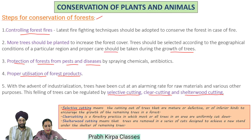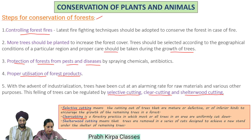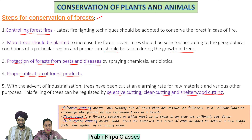Clear cutting is a forestry practice in which most or all trees in an area are uniformly cut down. Shelter wood cutting means that trees are removed in a series of cuts designed to achieve a new stand under the shelter of remaining trees, encouraging the growth of remaining trees in the forest.